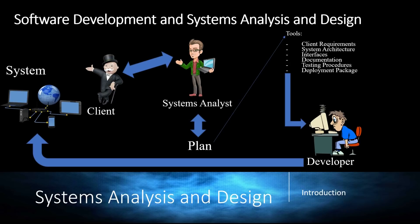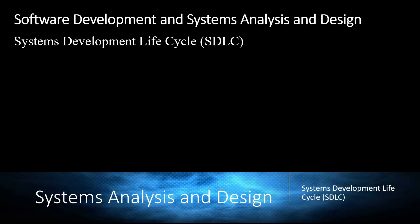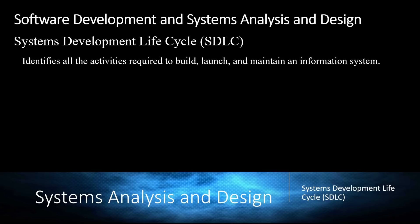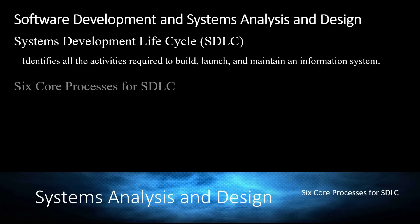Especially for a large project, this is a huge undertaking that requires a team of people. When you have requirements like these, you need a controlled system for developing software based on client requirements. That's when we come to Systems Development Lifecycle, or SDLC. SDLC identifies all the activities required to build, launch, and maintain the information system — and it is essentially a project. We're going to talk about the six core processes of SDLC.